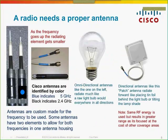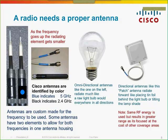As the frequency gets higher, the radiating element or radio wave gets smaller. The 2.4 GHz dipole has a longer radiating element than the 5 GHz one, which has a shorter element. There are different types of antennas: an omnidirectional antenna radiates like a light bulb — a 3D beach ball effect, radiating everywhere. A directional antenna like a Yagi or patch is like putting tinfoil behind the light bulb — now you're radiating forward. Antennas are custom made for the frequency they're used on.